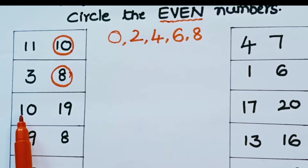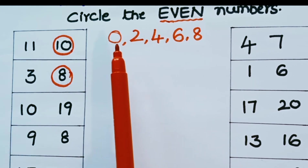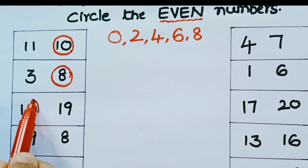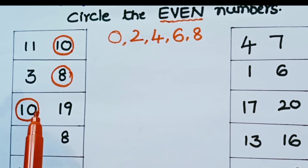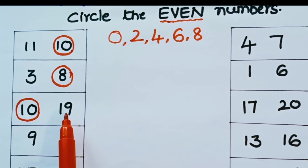Now look at the next row. The number is 10. The ending number in 10 is 0. Is 0 odd or even? It is an even number, so we circle 10. The next number is 19. 19 is ending with 9, which is an odd number, so we should not circle 19.